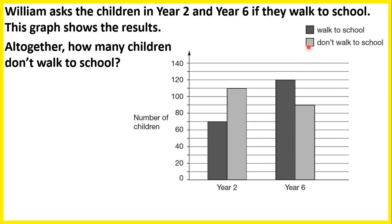We can see that the children who don't walk to school have a pale grey bar. For year 2, if we go to the top and then across, we can see that's between 100 and 120, so 110. And then for year 6, we can see that we have 90 children, because that's between 80 and 100.